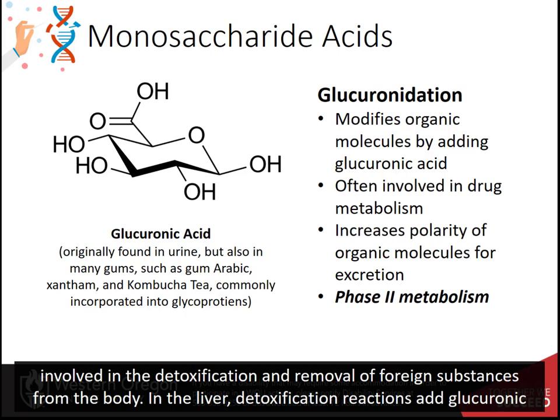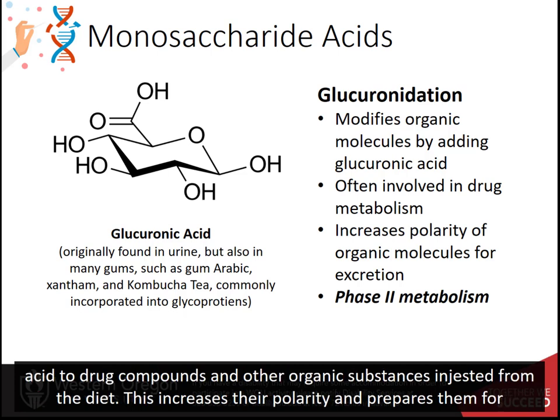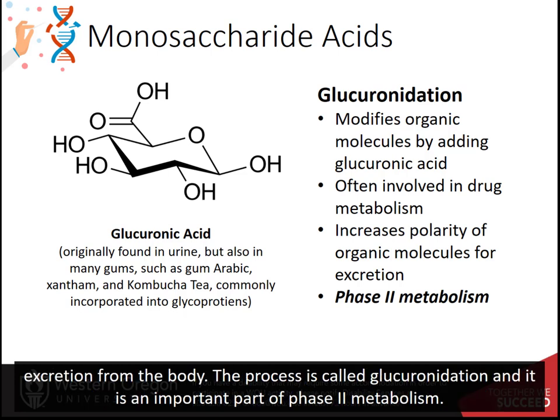In the liver, detoxification reactions add glucuronic acid to drug compounds and other organic substances ingested from the diet. This increases their polarity and prepares them for excretion from the body. The process is called glucuronidation and it's an important part of phase 2 metabolism.